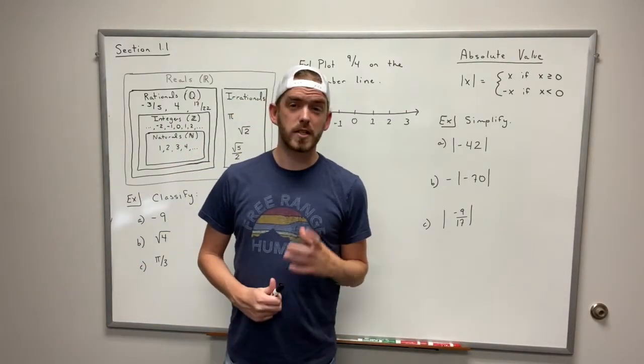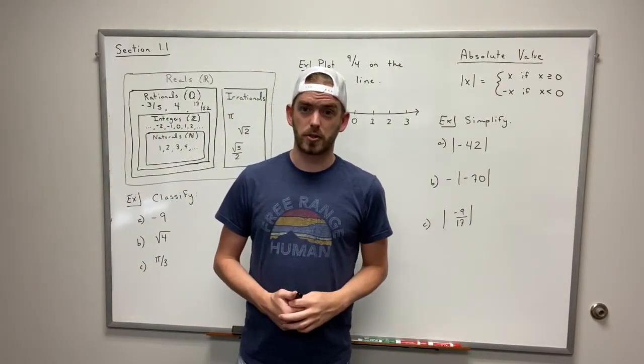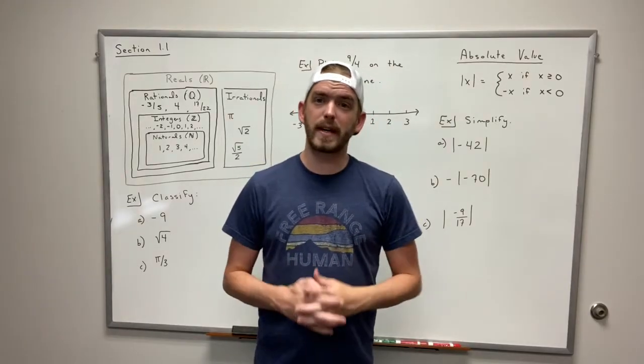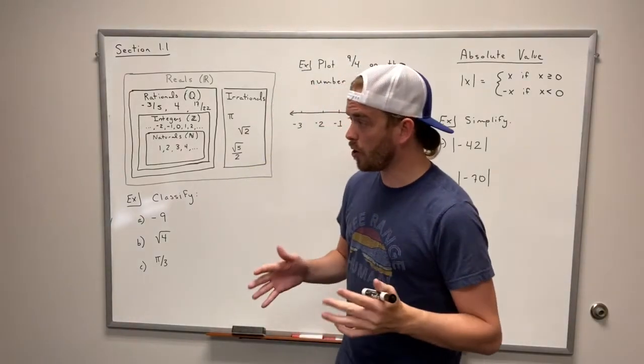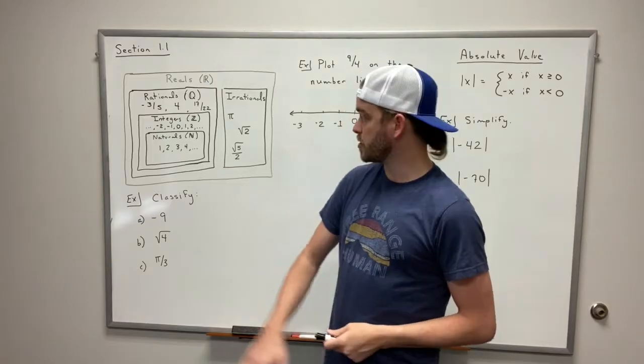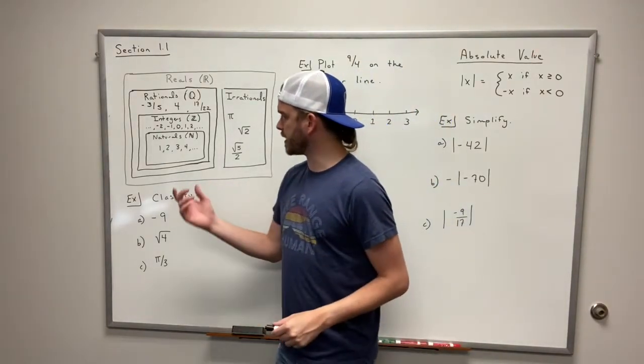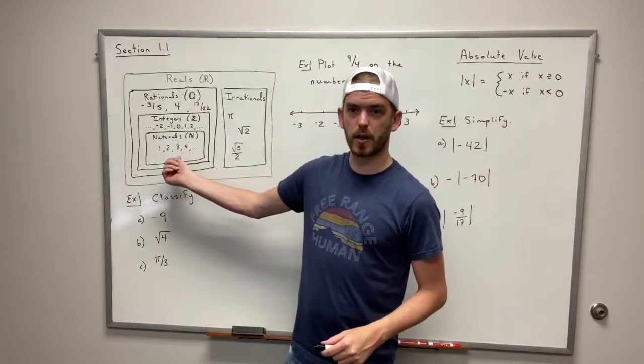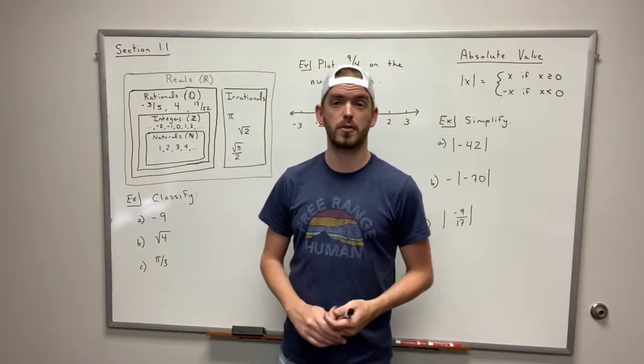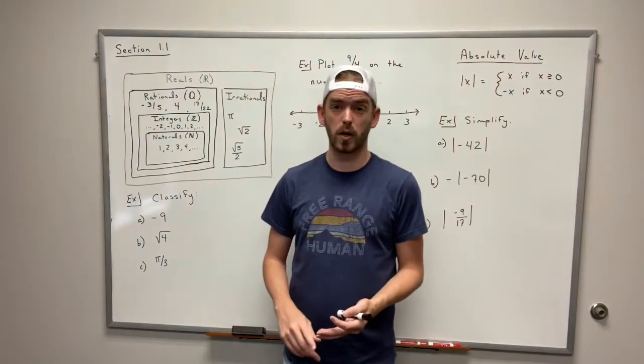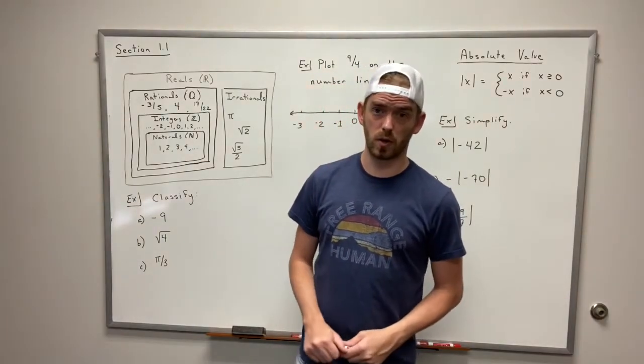For section 1.1 we're gonna be talking about the introduction to real numbers and so the first thing that we need to figure out is what are the subsets of the real numbers. So we have this nice little box here that's also in your textbook. If we look at the smallest box inside here we have what are called the natural numbers. Those are your counting numbers. They start with 1 and they just increase: 1, 2, 3, so on and so forth.